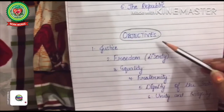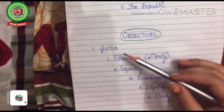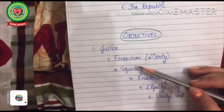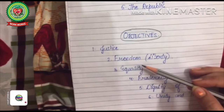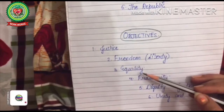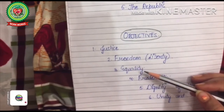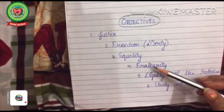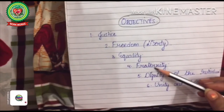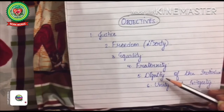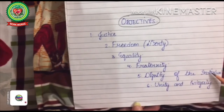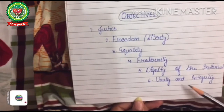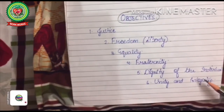The objectives of the Constitution are: to provide justice to all citizens; to provide freedom to all citizens; to provide equal status to all citizens; to spread the feeling of brotherhood, that is fraternity; to respect the dignity of individuals; and to uphold and protect the unity and integrity of the nation.